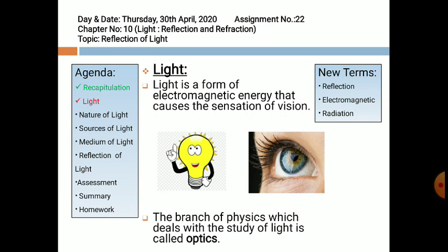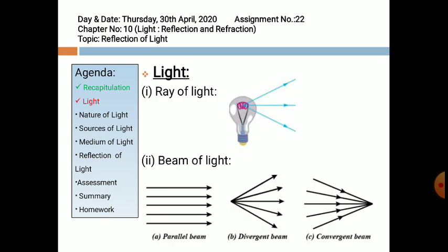Ray optics deals with reflection and refraction. If there is a source of light, there will be rays and beams of light. A line drawn in the direction of propagation of light is called a ray of light. As you can see in the figure, there is a glowing bulb and three lines coming out of it; individually, they can be termed as a ray of light. A group of rays of light emitted by a source is called a beam of light.